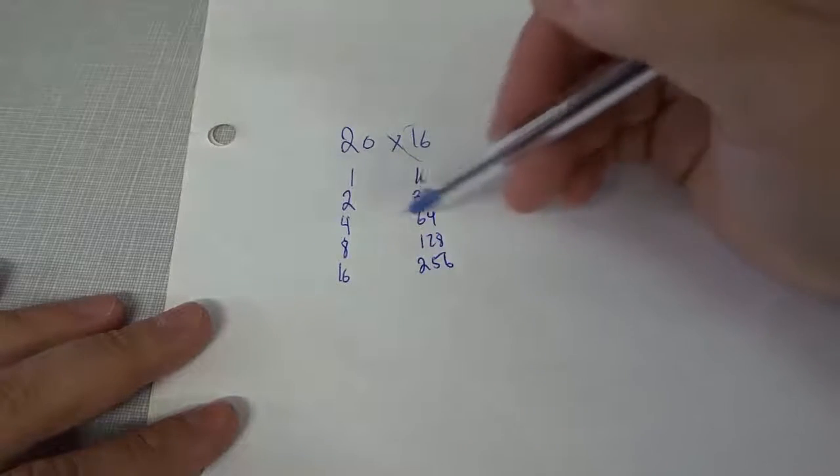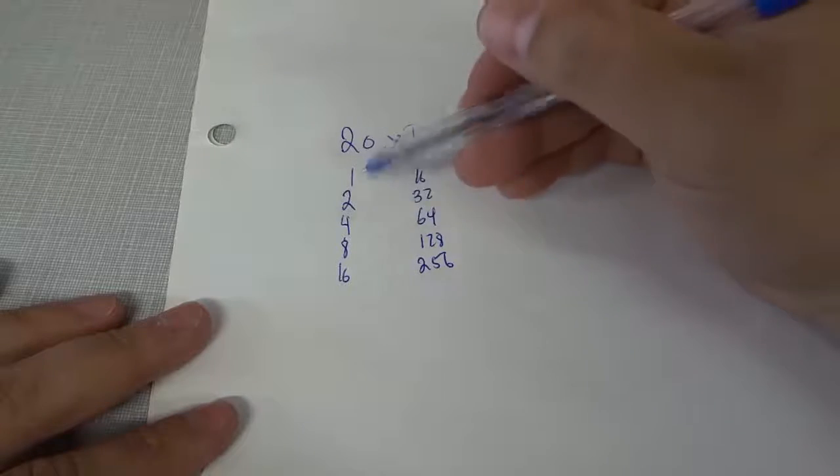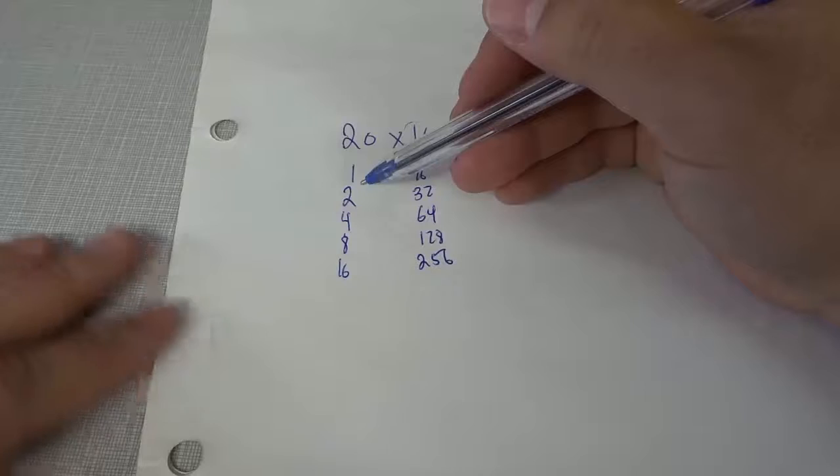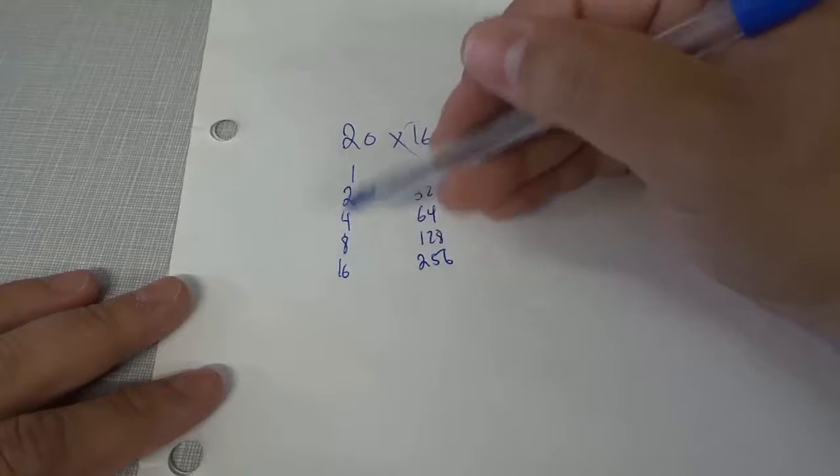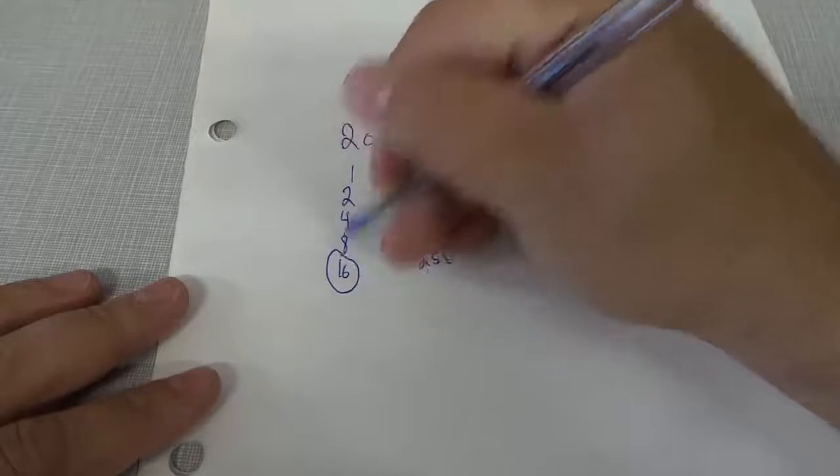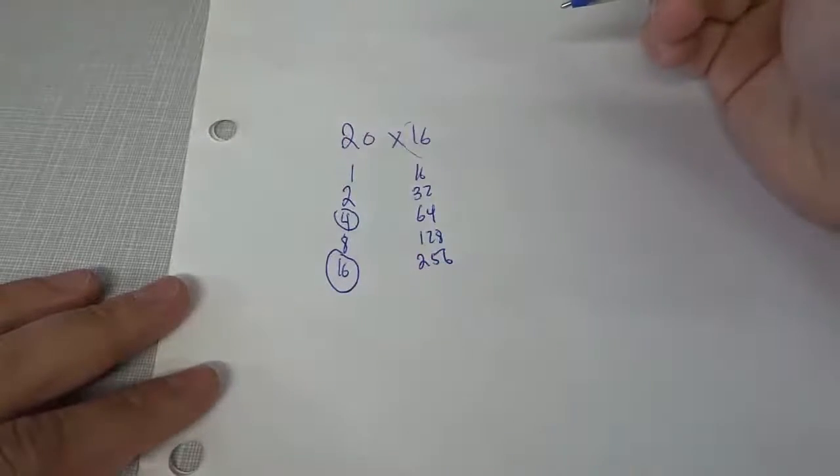So what we have now is we have these rows. Now on the left row right here, we want to choose two numbers or three numbers or however many numbers, the easiest way to take numbers from here and add up to 20. So if I take the 16 and I take the four, they add up to 20.